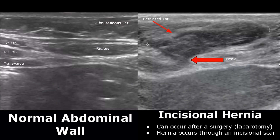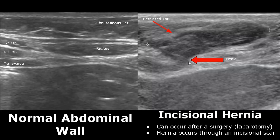An incisional hernia can occur after a surgery such as a laparotomy; the hernia will occur through an incisional scar. In this image, this was the site of incision and the hernia has occurred here. Herniated fat is seen protruding through this defect.